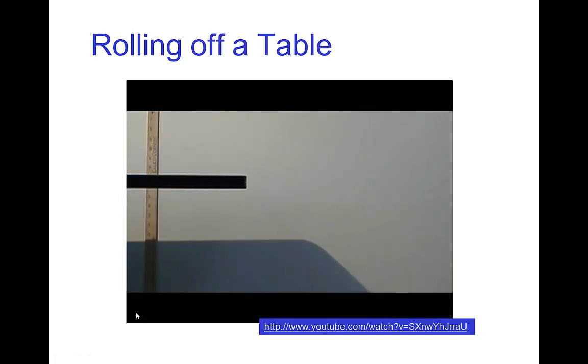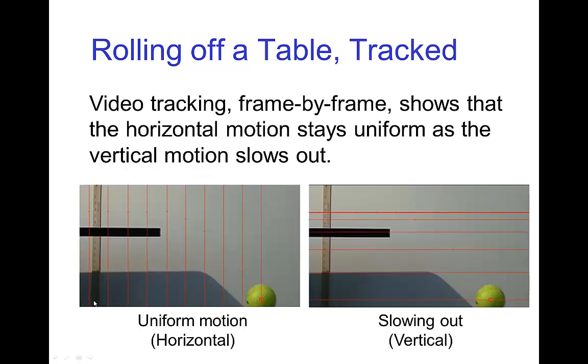So there you see that. Now if we go and do some video tracking of the position of the ball on each frame in that video, you see marking the position of the ball and looking at the horizontal spacings, basically they stay constant. The ball, as soon as it leaves the table, the vertical spacings slow out.